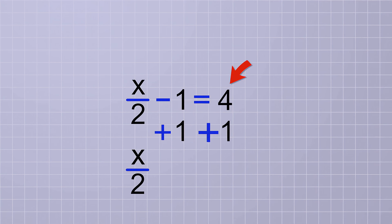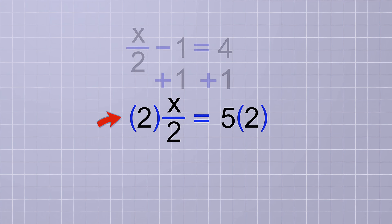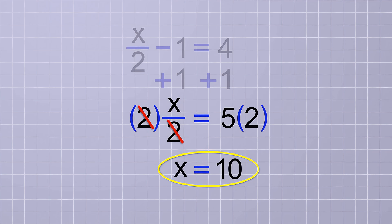On the first side, the minus 1 and the plus 1 cancel out, leaving just x over 2. And on the other side, we have 4 plus 1, which is 5. Then, to undo the divided by 2, we multiply both sides by 2. The 2's cancel on the first side, leaving x all by itself, and on the other side, 2 times 5 is 10. So our answer is x equals 10.